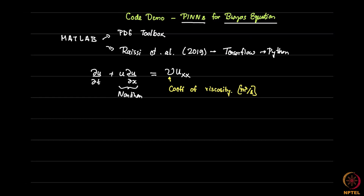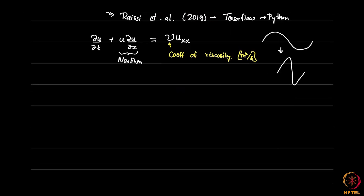If u represents velocity, its units are meters squared per second. This term basically tells you what the viscous or diffusion term is in this equation. Burger's equation, even if you start smooth, can actually sharpen and become shocks. That's why it is a good example for Navier-Stokes, especially compressible Navier-Stokes equations. I am taking an example with initial conditions taken directly from the paper.